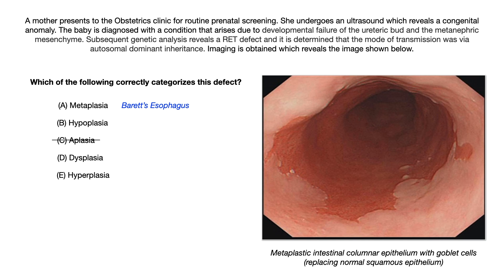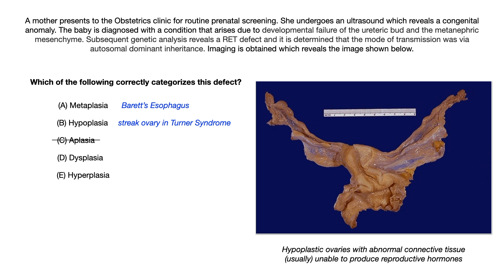If they want you to pick hypoplasia, the best example is a streak ovary in Turner syndrome. They'll show you a gross picture and the description might say ovaries with abnormal connective tissue, usually unable to produce reproductive tissue. They're not going to give you the word hypoplastic, but the full description is hypoplastic ovaries. These ovaries don't develop normally and are usually not able to produce reproductive hormones. In a gross picture, they're described as somewhat saggy, a little smaller, and embedded in an abnormal connective tissue sheath — that's what hypoplasia is, when cells don't fully develop.